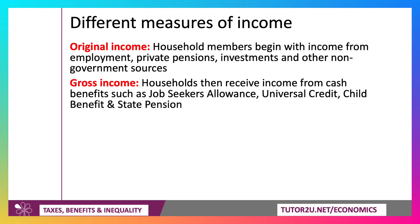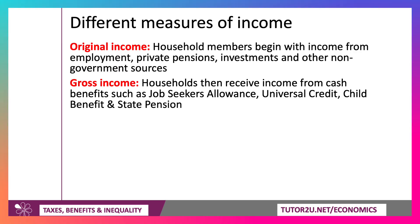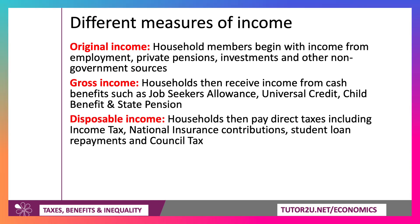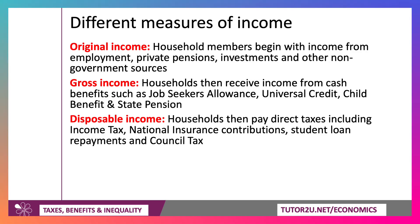Gross income is original income plus the effects of cash benefits. So that might include jobseekers' allowance for the unemployed, families claiming universal credit or personal independence payments, child benefit, and also the state pension. Disposable income is gross income minus direct taxes — the biggest of which is income tax — then national insurance, and we also include the effect of student loan payments and council tax.